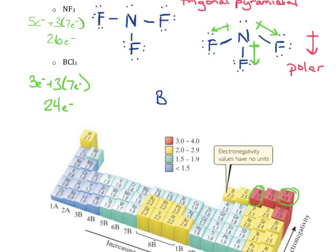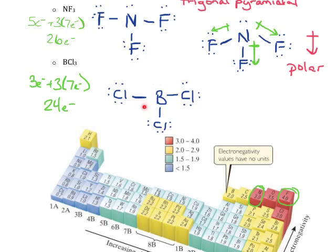I've used all 24 electrons. All of the chlorines have an octet because they've got 2, 4, 6, 8 electrons surrounding them. Boron does not have an octet — it's only got six electrons surrounding it — but because of where boron is in the periodic table, that's fine. Boron does not need a complete octet.